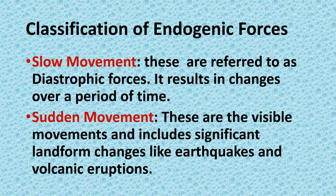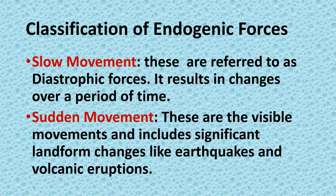Classification of endogenic forces: they are divided into two movements — slow movement and sudden movement. Slow movement is referred to as diastrophic forces and results in changes over a period of time. Sudden movement, as the name suggests, includes visible movements and significant landform changes like earthquakes and volcanic eruptions. Diastrophic forces can be defined as forces created due to the movement of solid material on the earth's surface, including all processes that raise, move, or build up parts of the earth's surface. Exogenic forces act on or above the earth's surface and always lead to slow movement, including depositional activities.